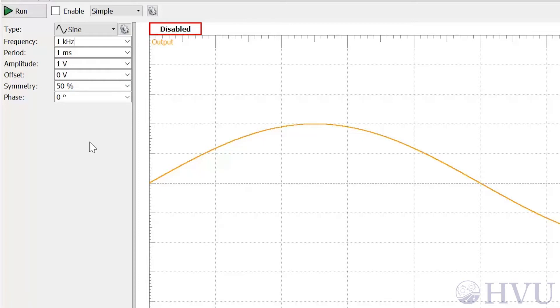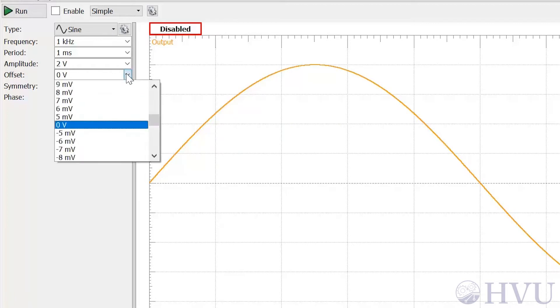The amplitude changes the range of the time-varying part of the signal, while the offset moves the average value of the signal up or down.